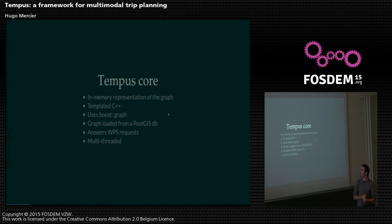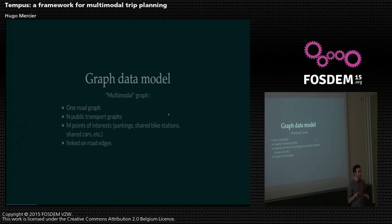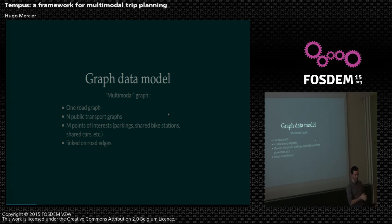The Tempus core stores the entire graph in memory. It's written in C++ and uses Boost.Graph. The graph is loaded from a PostGIS database, it answers WPS requests, and it's multi-threaded so requests can be processed in parallel. It's designed to be as lightweight as possible. We have a particular data model called the multimodal graph: the root is the road network, and on top of it you can connect other graphs — public transport graphs and points of interest like parkings, shared bike stations, shared car stations — all linked on road edges.